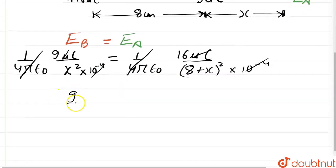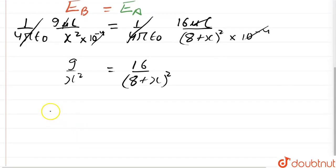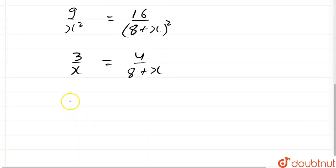We are left with 9/x² = 16/(8+x)². Taking the square root of both sides: 3/x = 4/(8+x). Cross-multiplying: 24 + 3x = 4x, which gives us x = 24 centimeters.